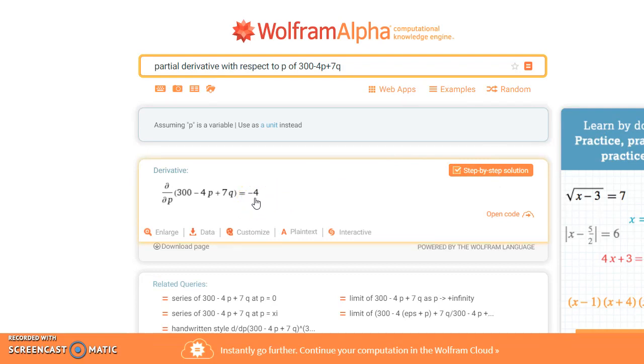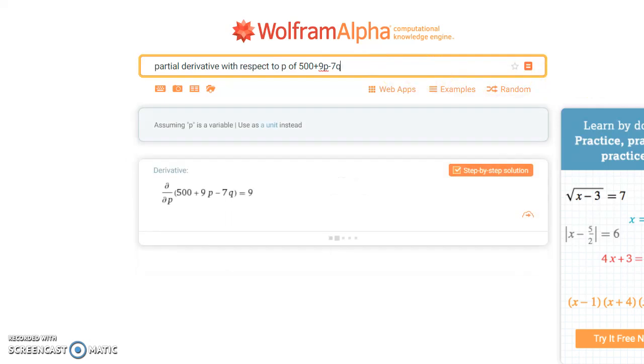We can also find the partial derivative with respect to P of our second function, Y equals 500 plus 9P minus 7Q. We get a result of 9.